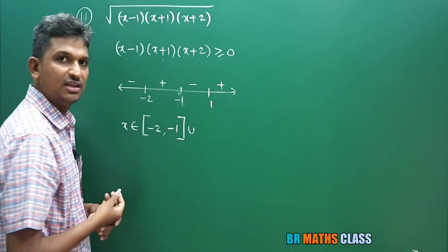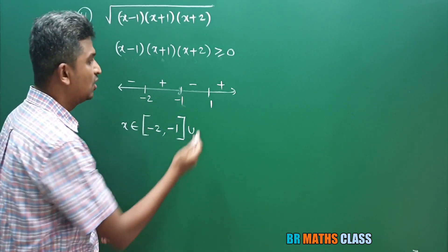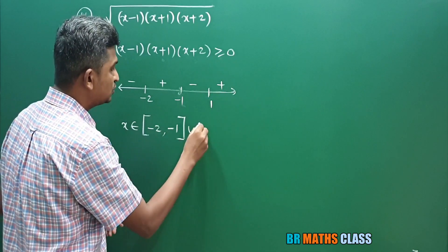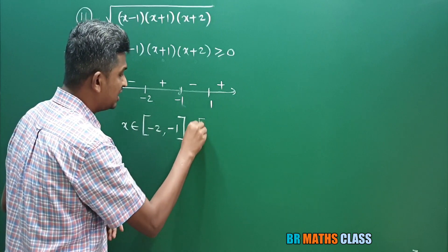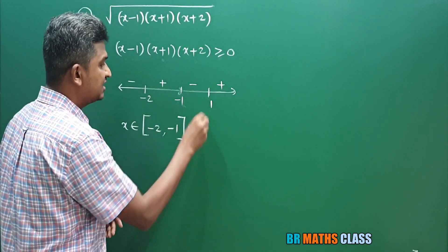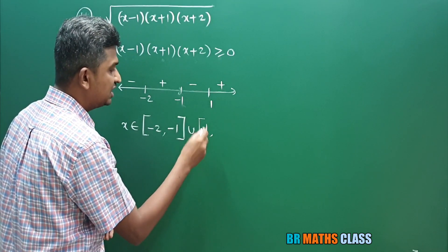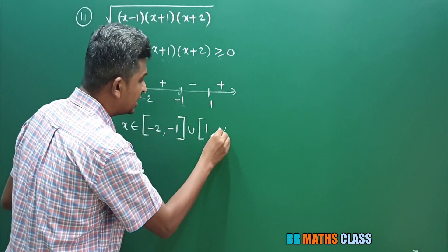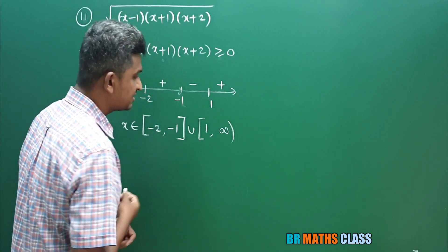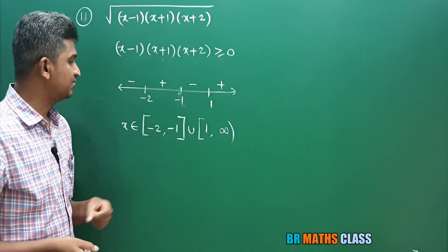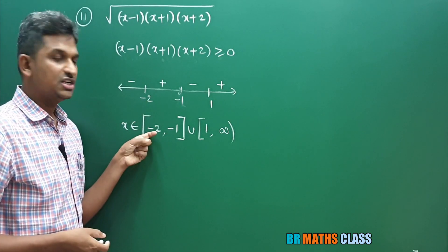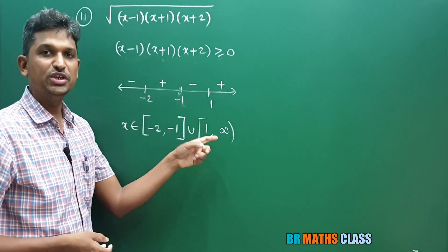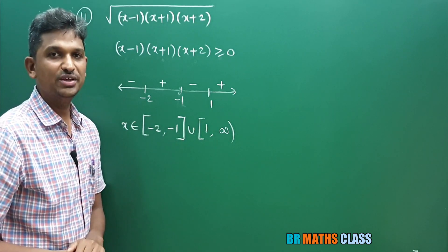Domain is closed interval minus 2 comma minus 1, union 1 to infinity. For infinity always use open brackets. So domain is closed interval minus 2 comma minus 1, union closed-open interval 1 to infinity.